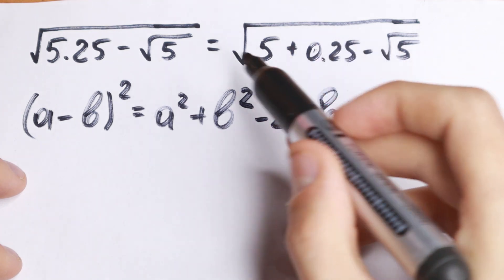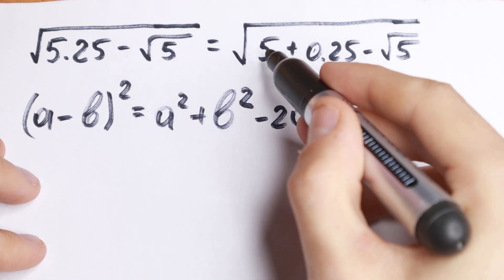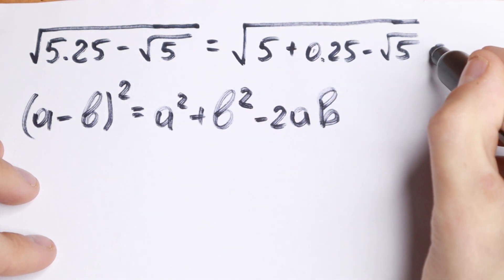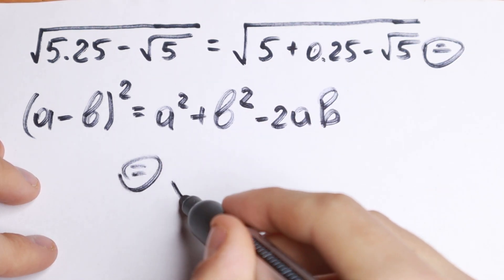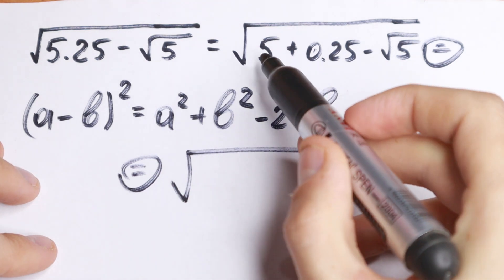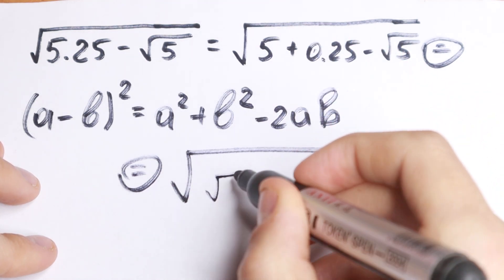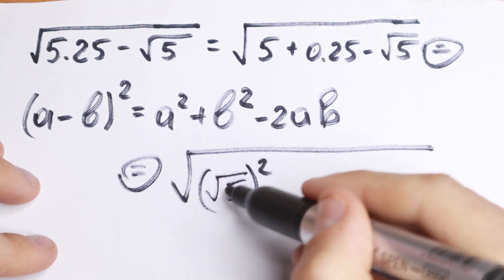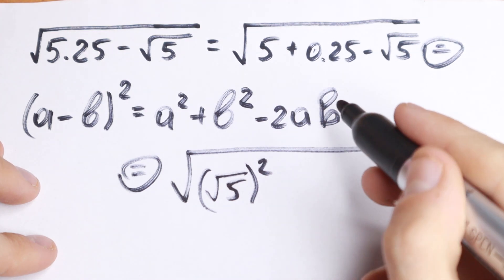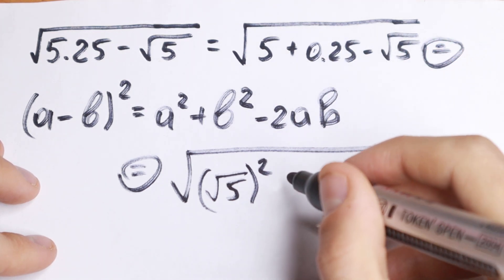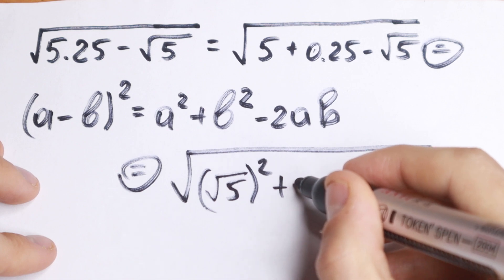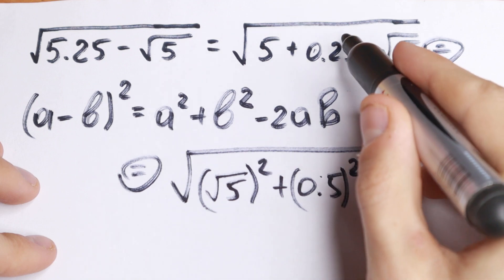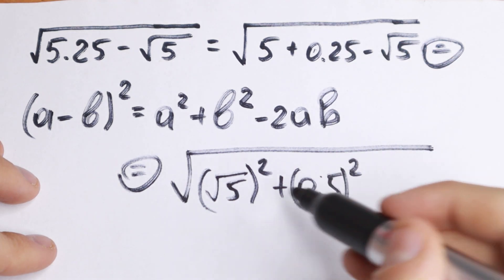We can rewrite this expression in another way. We can write the 5 inside the square root as (√5)², since raising a square root to the second power gives back the same value. And we write 0.25 as (0.5)², which is also the same 0.25, just written differently.